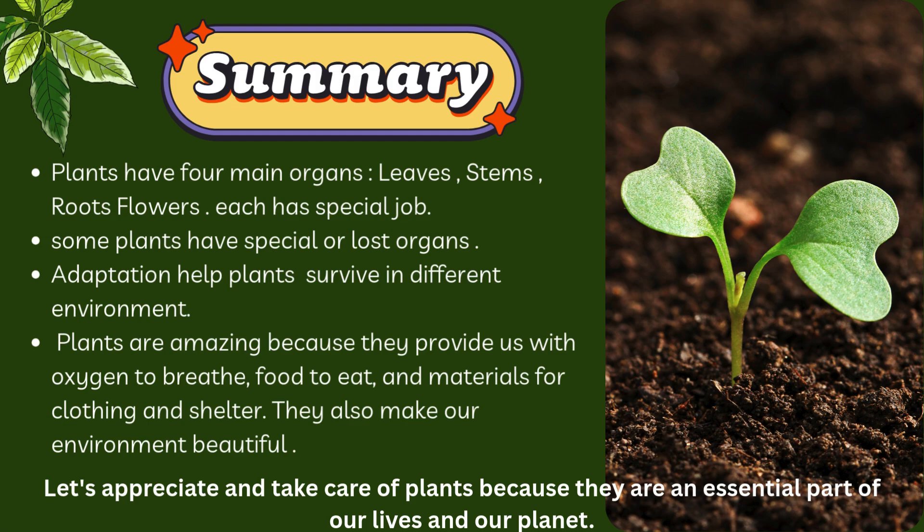Each part has its own function. Leaves are like the kitchen of the plant — they make food using sunlight. Stems act like a highway, carrying water and food up and down. Roots anchor the plant in the soil and absorb water and minerals. Flowers are special because they make seeds so the plant can reproduce.